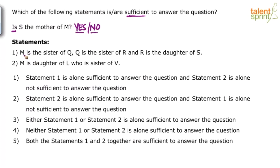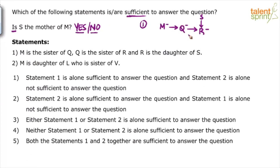Is S the mother of M? Statement 1: M is a sister of Q. So M is female and sister of Q. Q is a sister of R — so Q is also female, sister of R. And R is a daughter of S. So M, Q, and R are all siblings and all of them are females — sister, sister, daughter. So all three are sisters, they are all daughters of S.